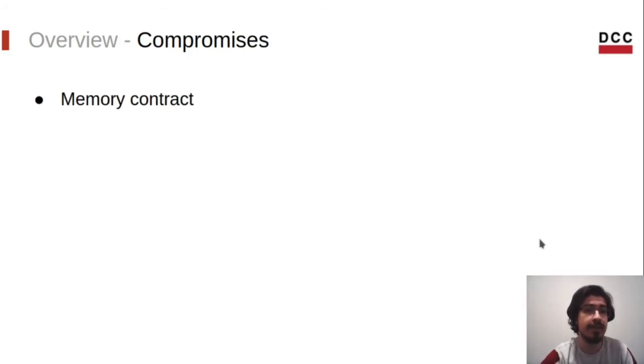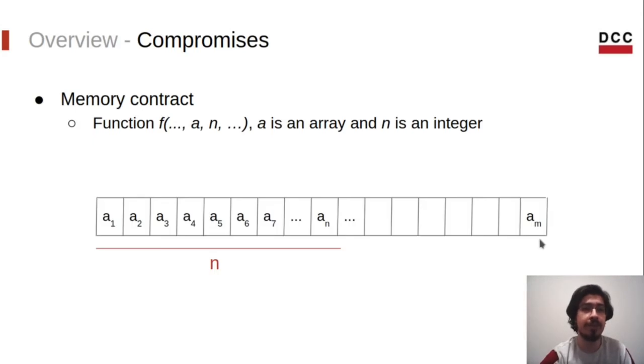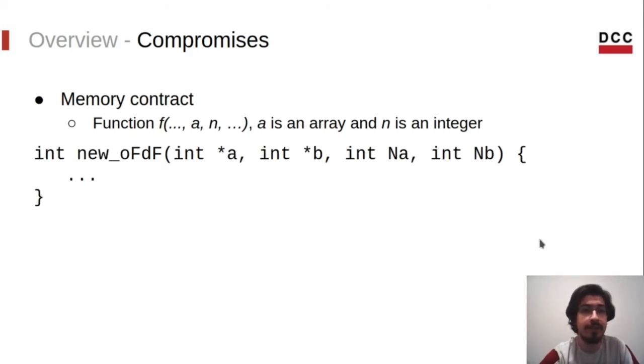A memory contract is a triple formed by the function f, the array a, and an integer n. This triple is a precondition stating that whenever f is invoked, the array a contains at least n valid cells. Here is an image that illustrates this concept. We have an array with m positions, and we know that the first n positions are always safe to be accessed. So we can use this in our transformation.